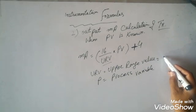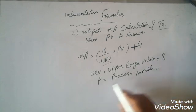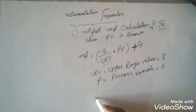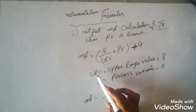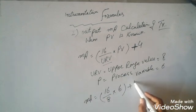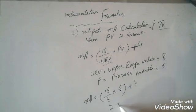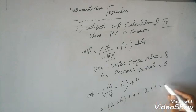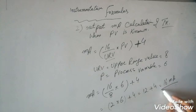For example, suppose URV is 8 and PV is 6. What will be the output of the transmitter in milliamps? Putting the values into the formula: (16/8) × 6 + 4 = 2 × 6 + 4 = 12 + 4 = 16 milliamps. So in this way we can calculate milliamps.